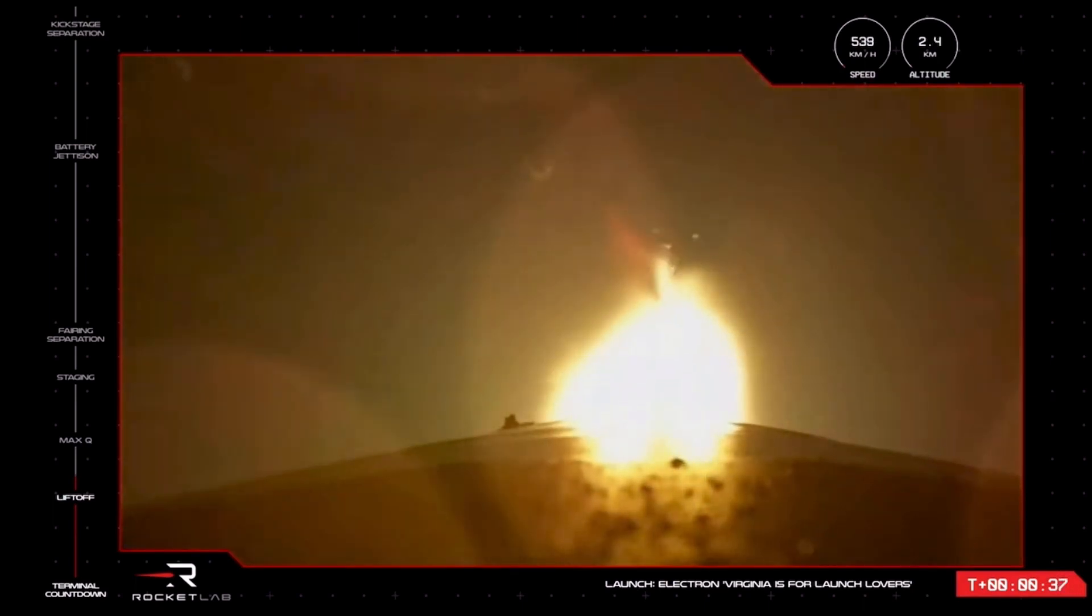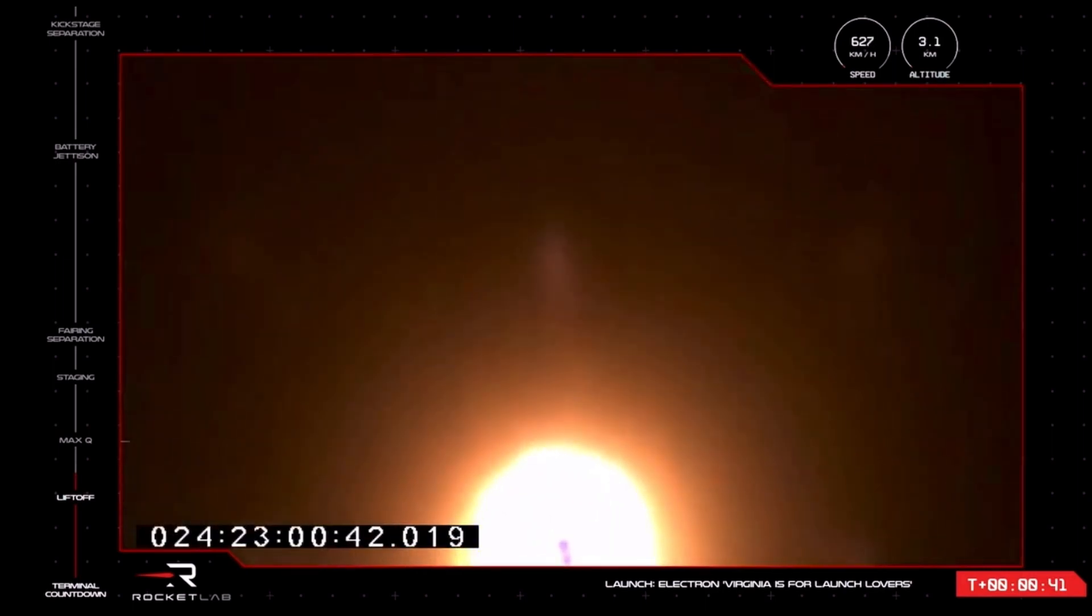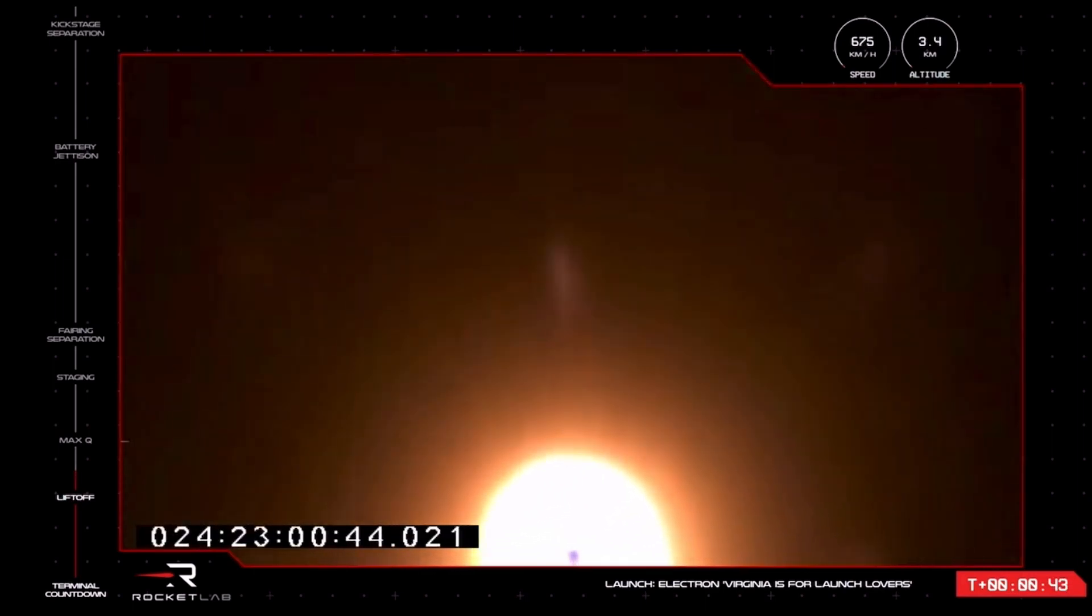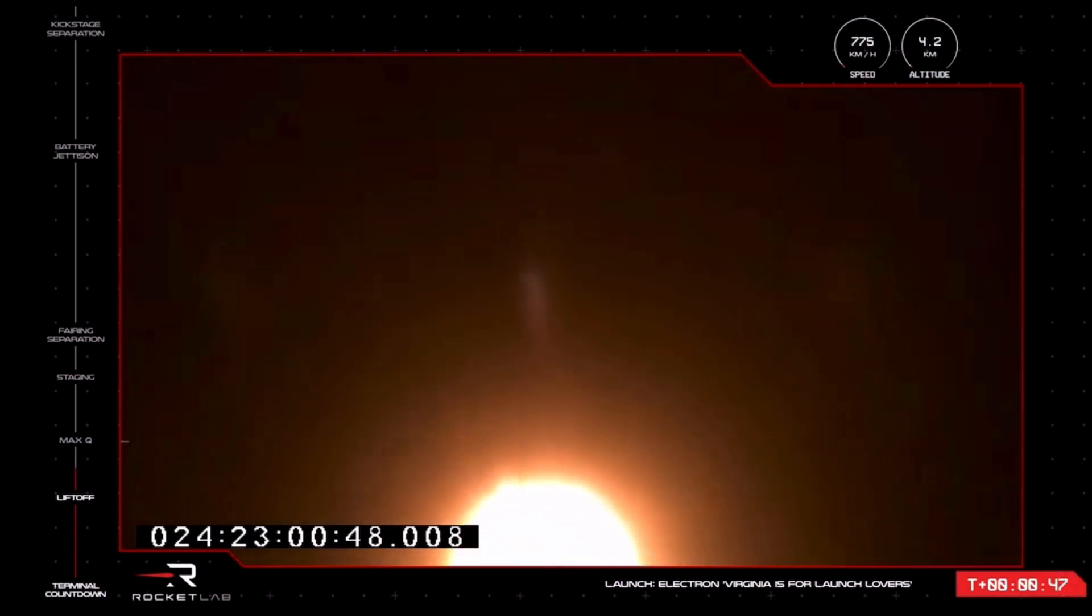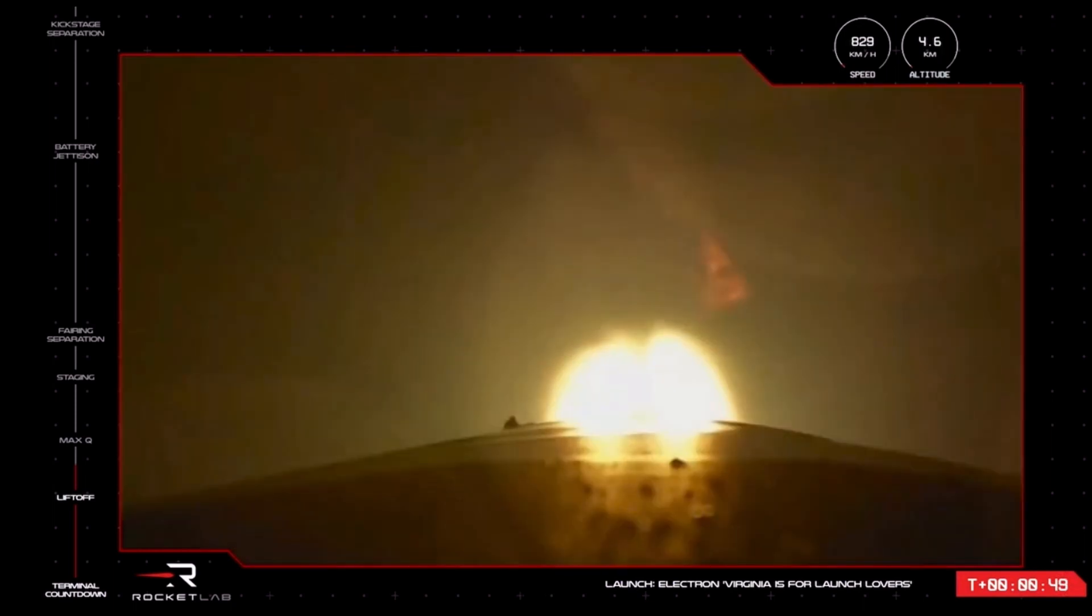Leaving US soil for the first time, and on its way to space up and over the Atlantic Ocean. All nine Rutherford engines on Electron's first stage now propelling the rocket at more than 700 kilometers an hour. We are hearing good calls from the teams in Virginia and Rocket Lab Mission Control, a clean ascent for Electron now nearly a minute into flight.